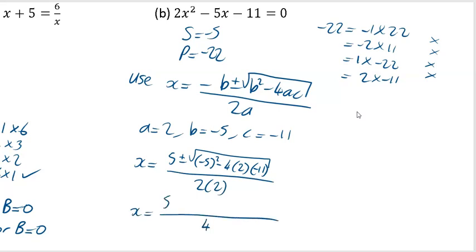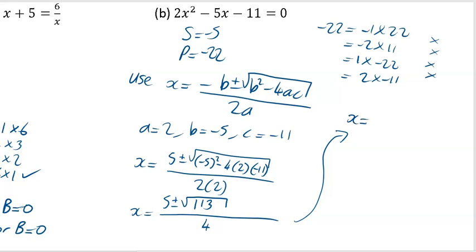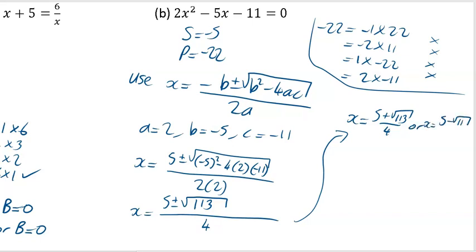The bottom line is easy — it's just going to be 4. On top it's 5 plus or minus the square root of that expression. Working that out in the calculator: brackets, minus 5, close bracket, squared, minus 4, bracket 2, close bracket, bracket minus 11, close bracket — that gives 113 inside the square root. So one x value is 5 plus the square root of 113, all divided by 4, and the other is 5 minus the square root of 113, all over 4. That gives x equals approximately 3.91 and x equals approximately minus 1.41, both to two decimal places.